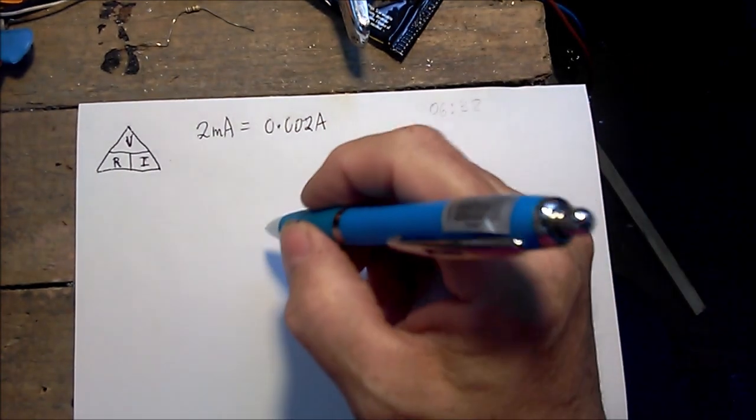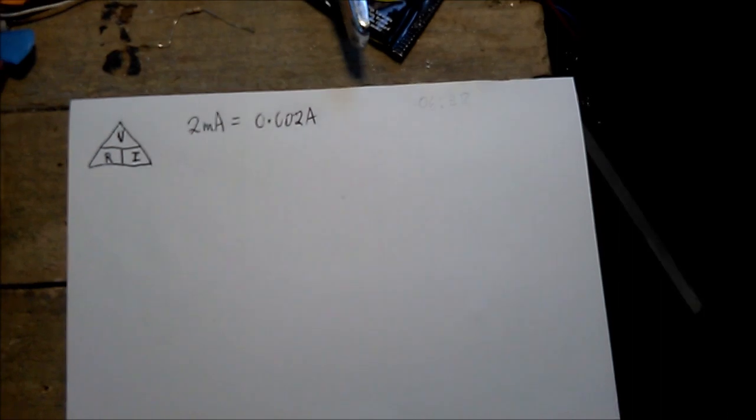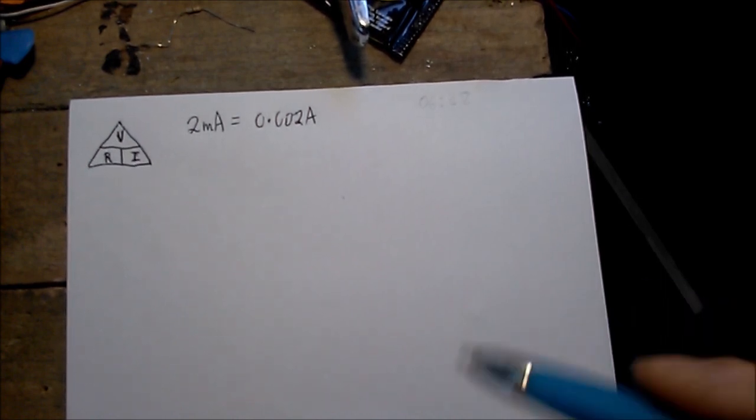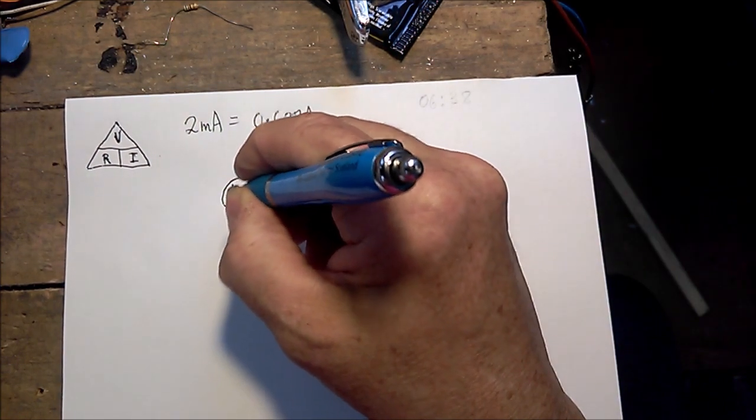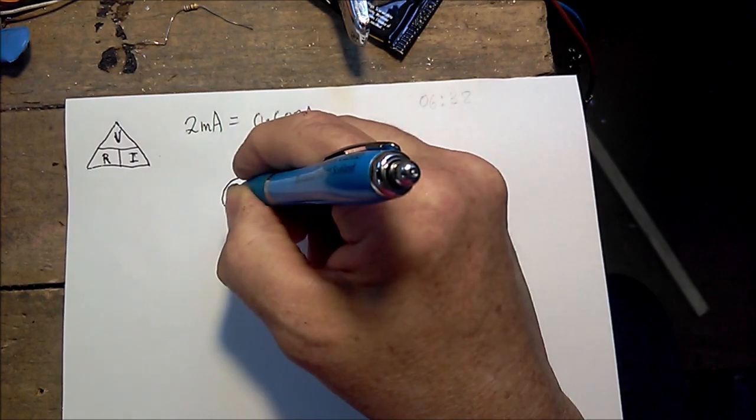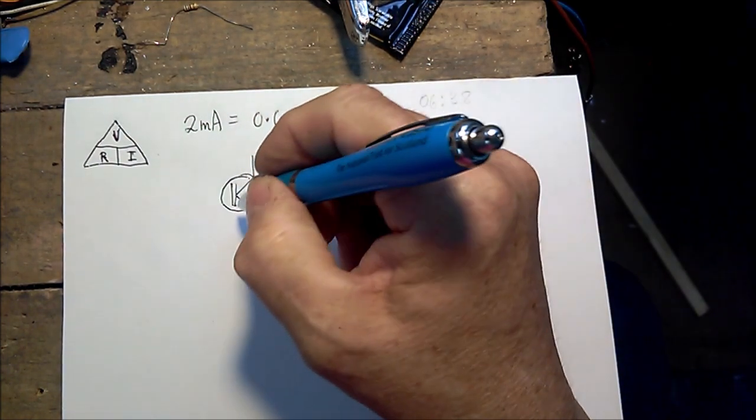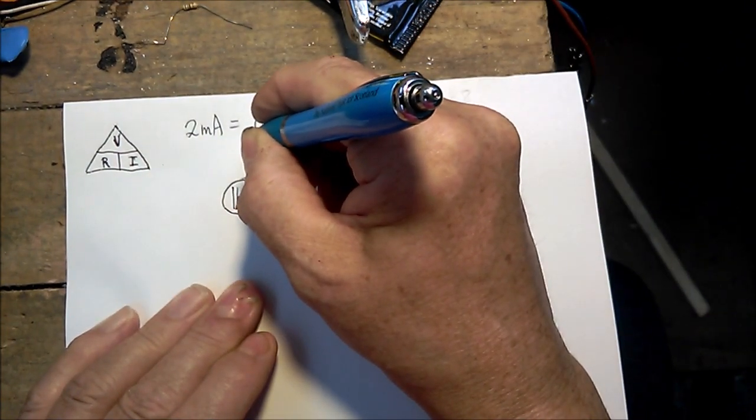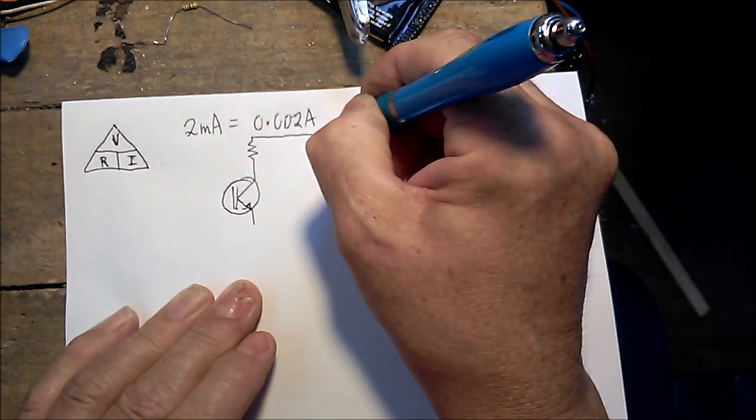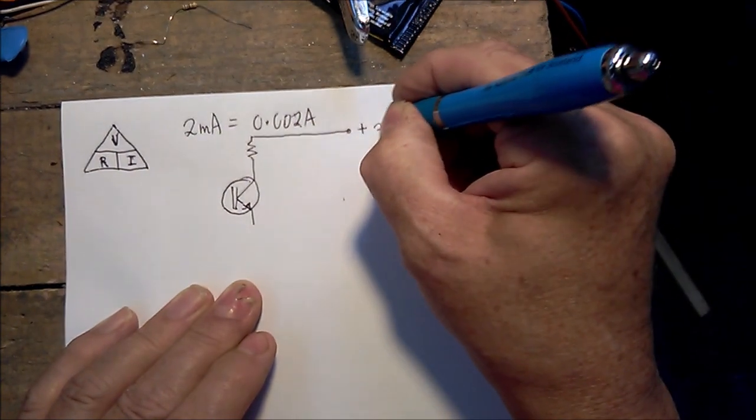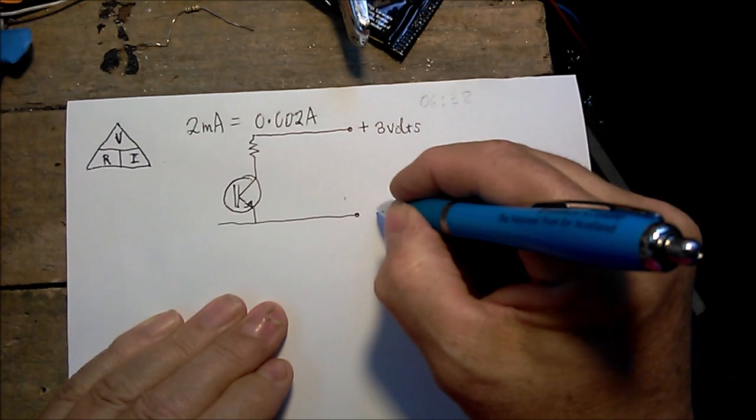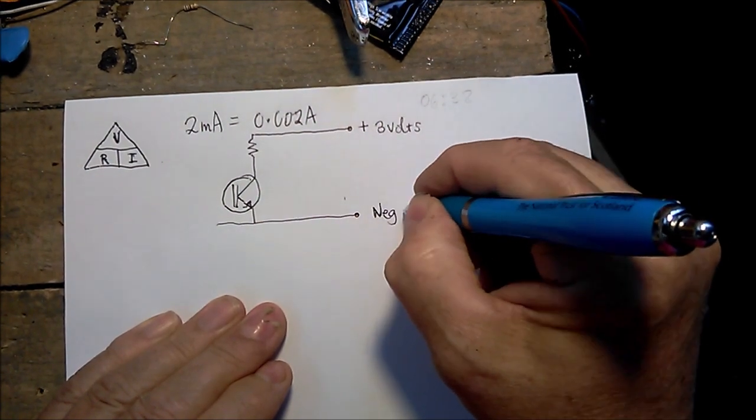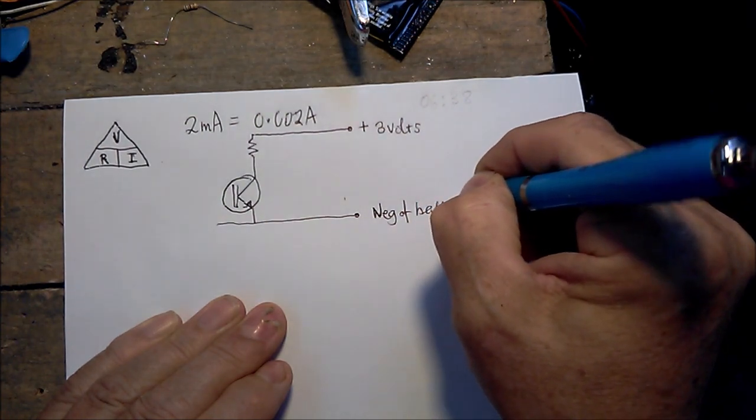The first stage of designing how we want the transistor to perform is to decide how much current we want flowing through it. We'll draw the transistor - this is a typical BC337 NPN transistor. We've got the resistor there, and then we've got the positive supply - in this instance, we've got positive three volts. That is the earth or the ground, and that goes to the negative of the battery.